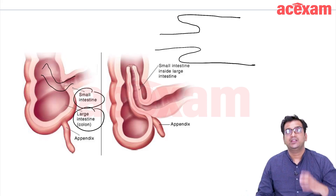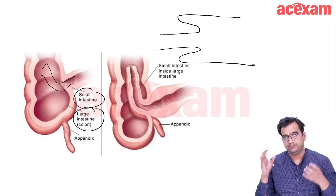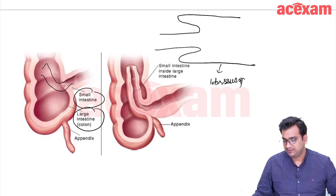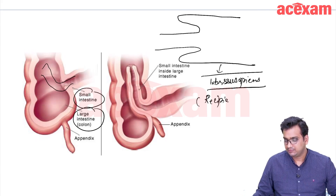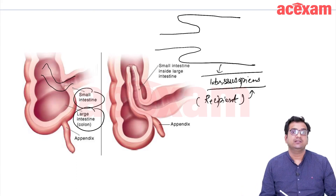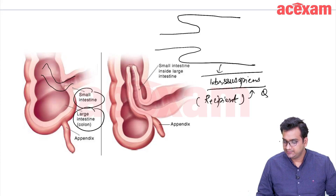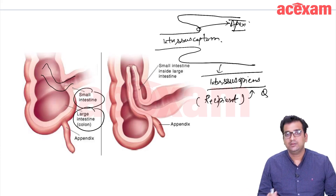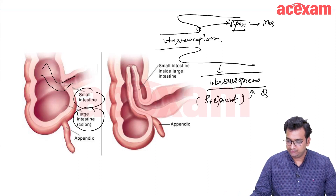The part which is receiving the other portion is known as the intussuscipient — the recipient is intussuscipient. The part which goes inside is the intussusceptum. The apex is the part most prone to gangrene or ischemia.